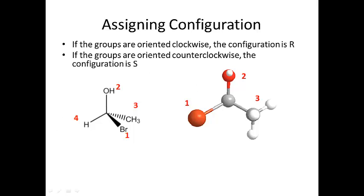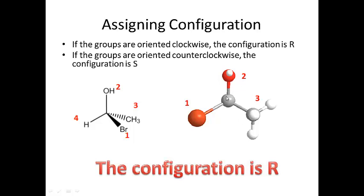Here, this is one, this is two, this is three. These three groups are oriented in a clockwise fashion, so the configuration here is R. We'll do more complicated examples another time, but let's look at that 3D again.